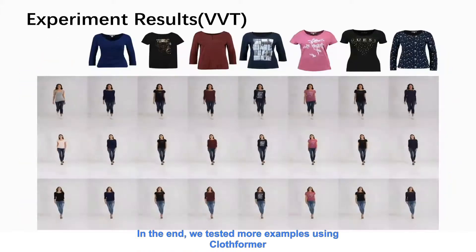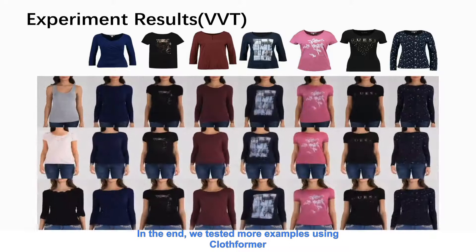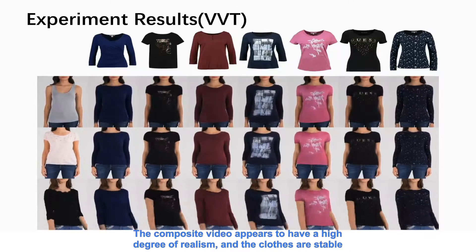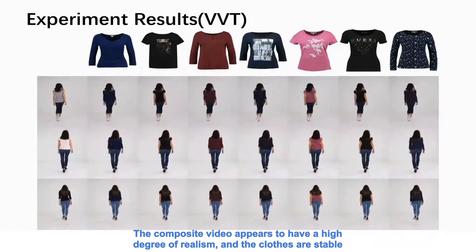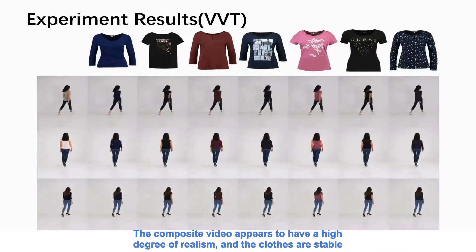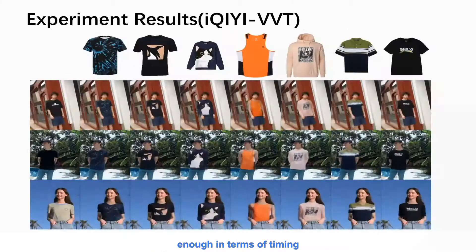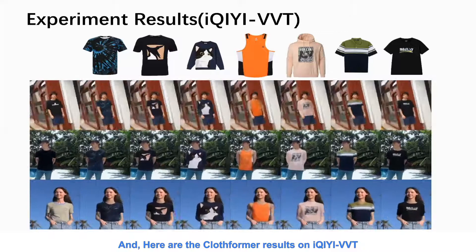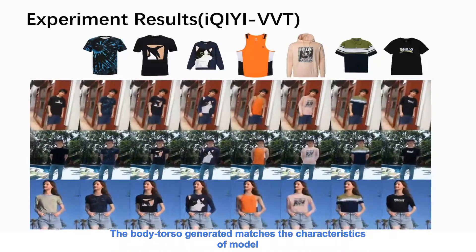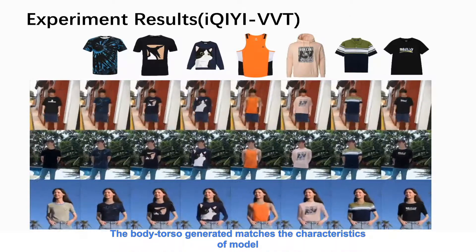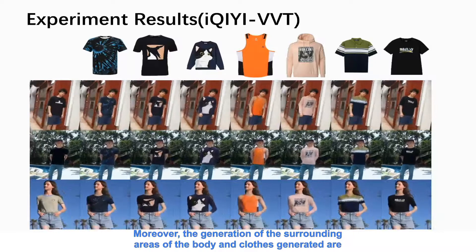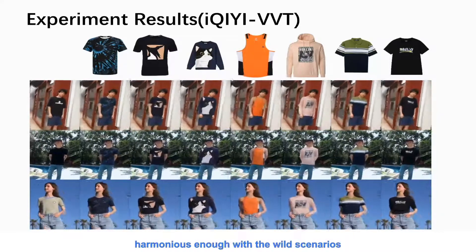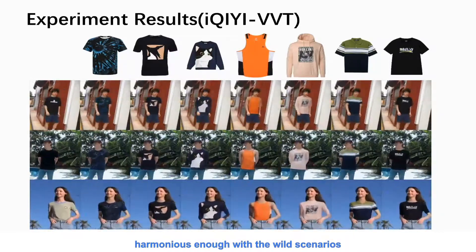In the end, we tested more examples using Clothformer. Here are the results on VVT. The composite video appears to have a high degree of realism, and the clothes are stable enough in terms of timing. Here are the Clothformer results on iqie-VVT. The body torso generated matches the characteristics of the model. Moreover, the generation of the surrounding areas of the body and clothes are harmonious enough with the wild scenarios.